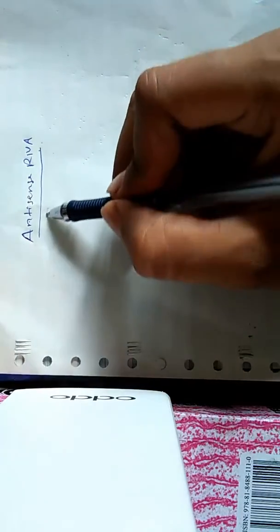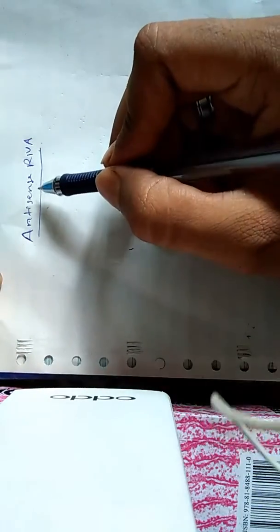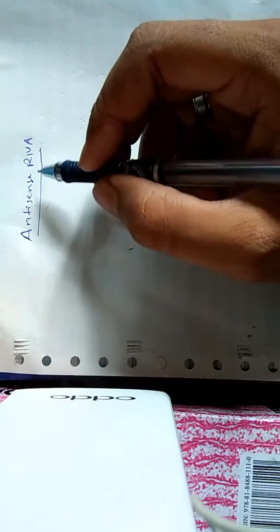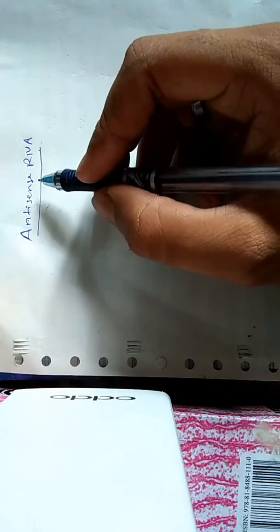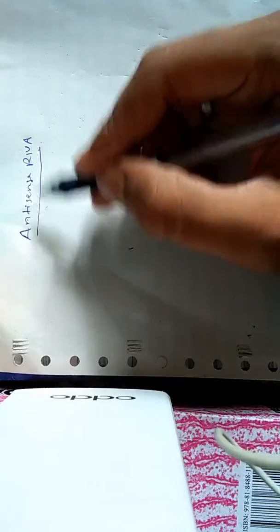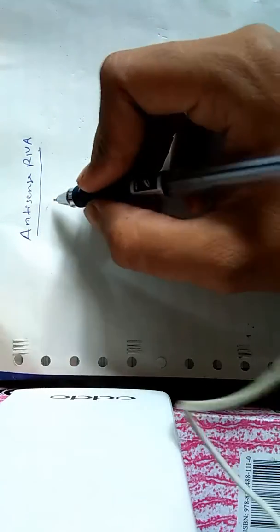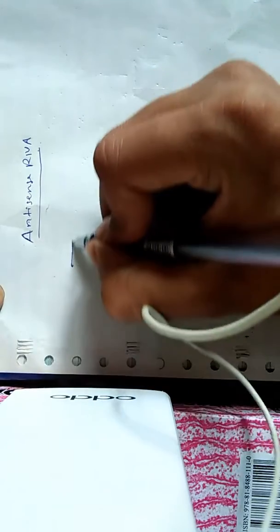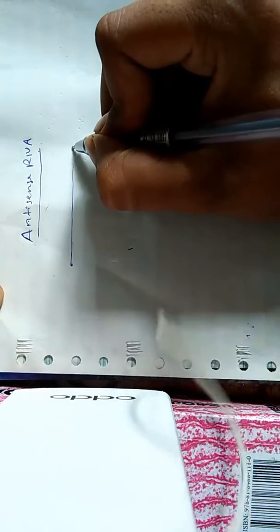Hello guys, this video is about antisense RNA. So what is antisense RNA? Antisense RNA is a single-stranded RNA that is complementary to messenger RNA transcribed within a cell. This means antisense RNA is a single-stranded RNA.